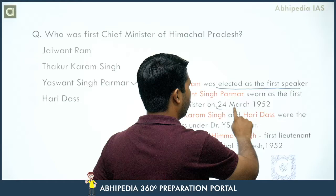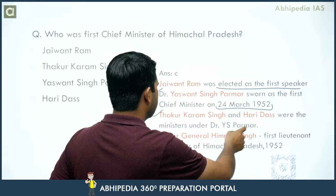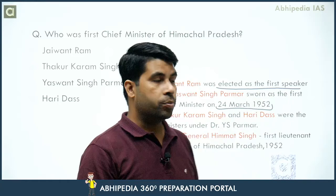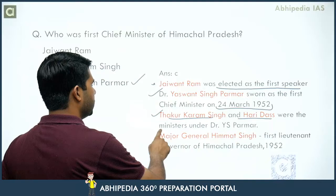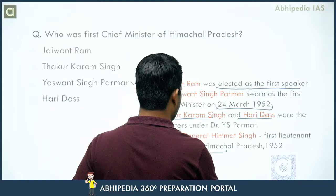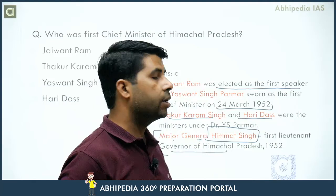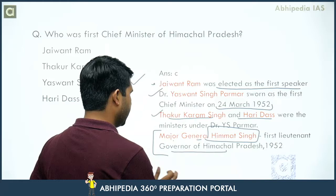Dr. Y.S. Parmar was the first Chief Minister from 24 March 1952. Thakur Karam Singh and Haridas were the ministers in that first ministry. Also noteworthy: the first Lieutenant Governor of Himachal Pradesh was Major General Himachal Singh, appointed in 1952.